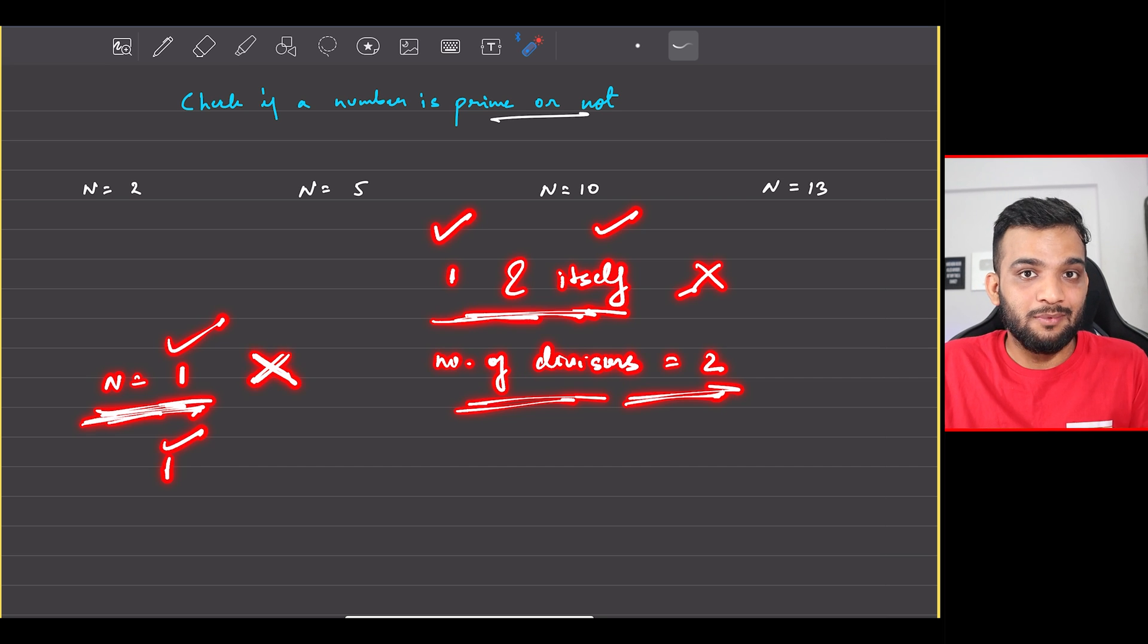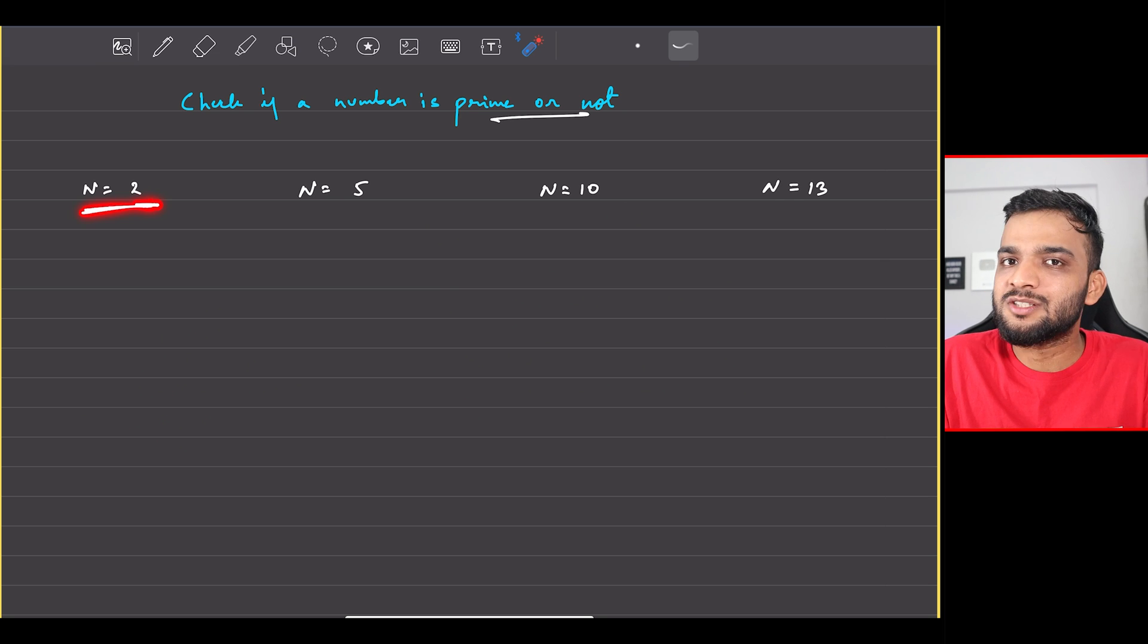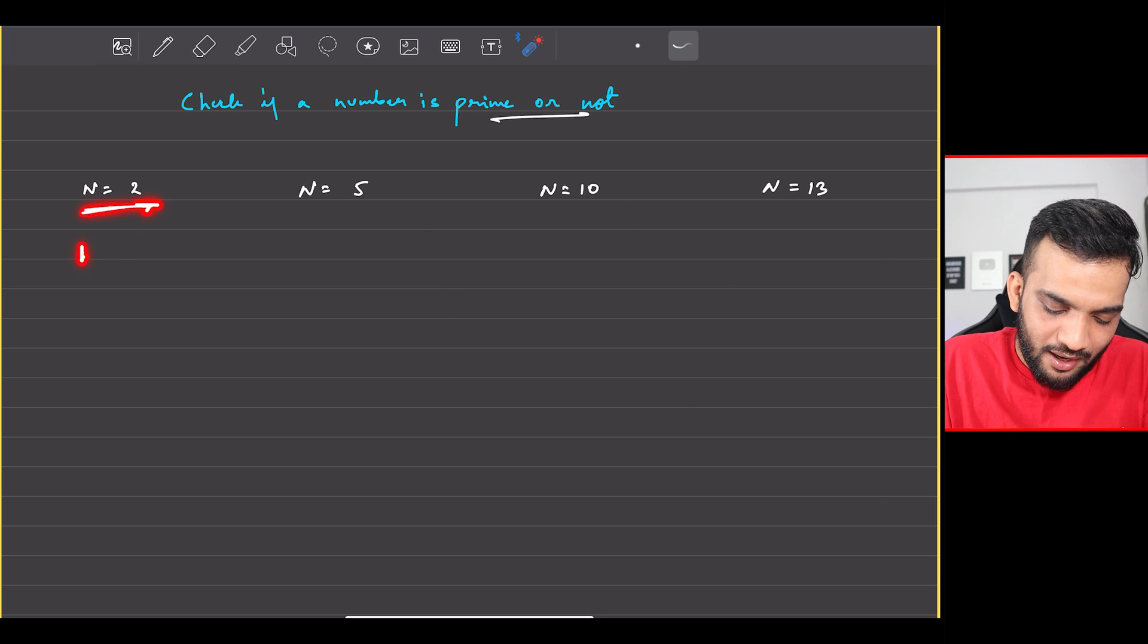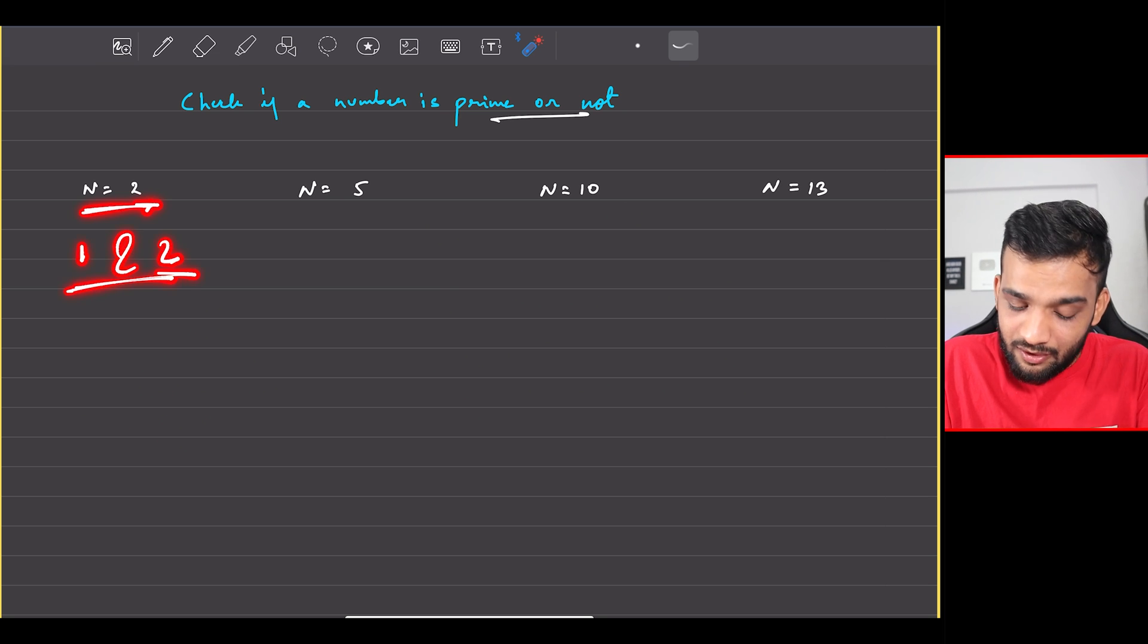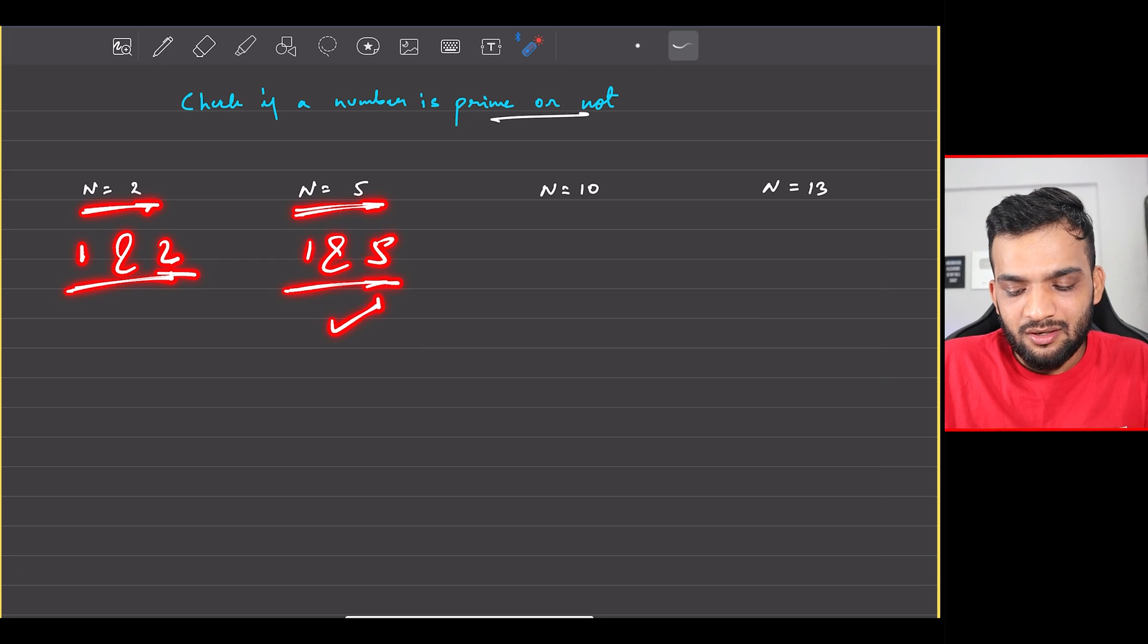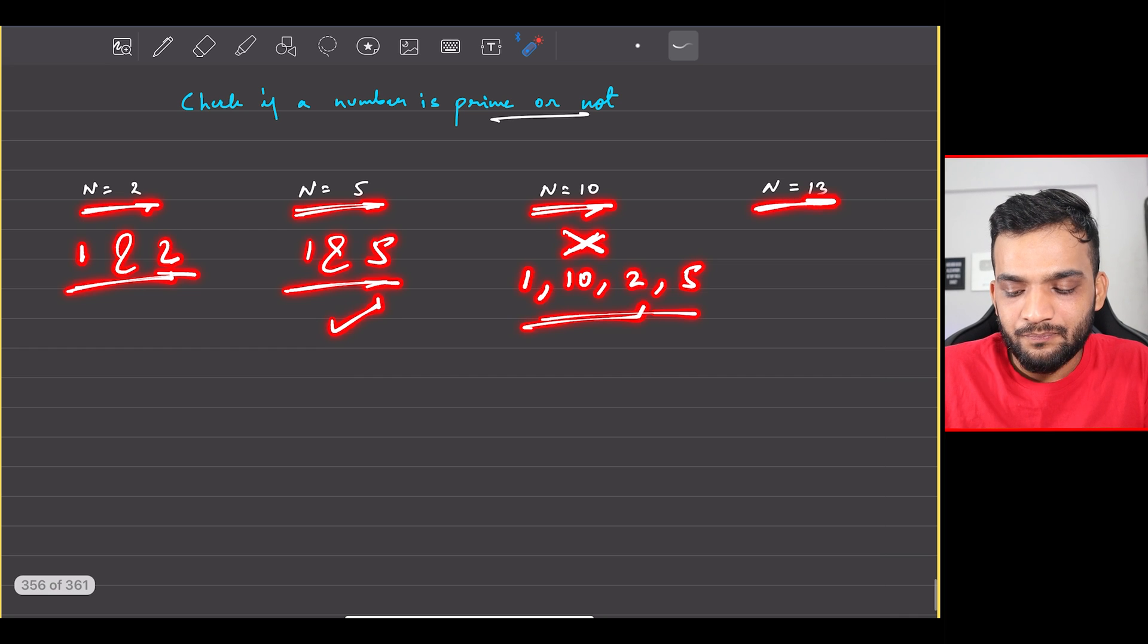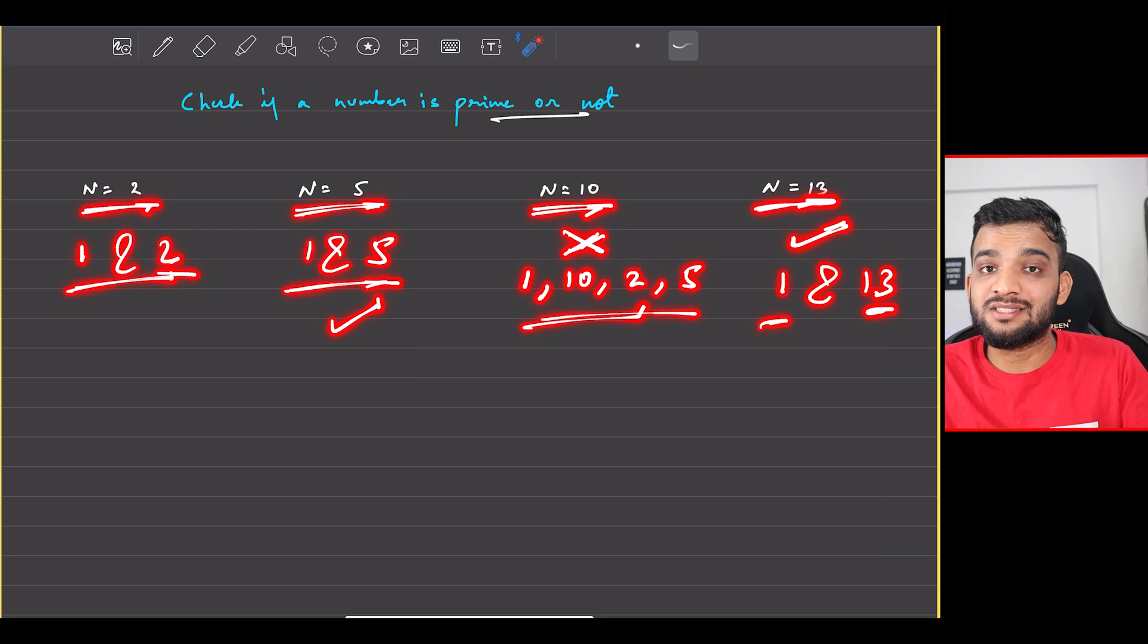If n is 2, is it a prime number? Yes, because two divisors are one and the number itself. Five? One and five, so yes. Ten? This is not a prime because it's divisible by 1, 10, 2, and 5. Thirteen is a prime number because it's only divisible by one and thirteen.